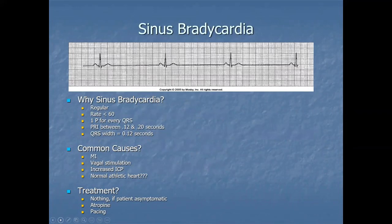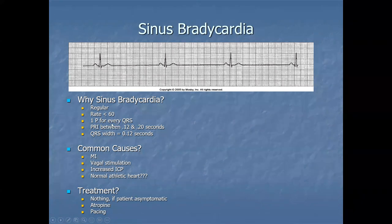Sinus bradycardia: the rhythm is regular — that's the good news. However, the rate is less than 60. There is one P wave for every QRS, which is a good thing. The PR interval is between 0.12 and 0.20 seconds, and the QRS width is within the guideline of 0.12 seconds.